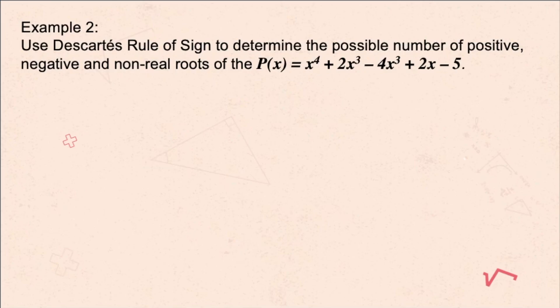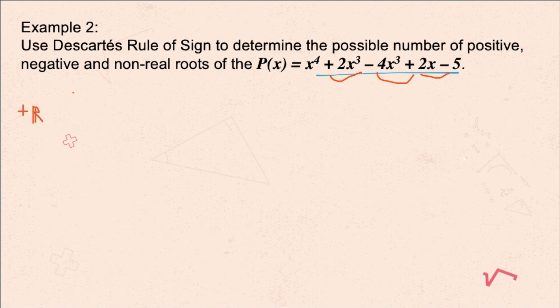Let's have the first example. Use Descartes' rule of signs to determine the possible number of positive, negative, and non-real roots of p of x equals x to the fourth power plus 2x cubed minus 4x squared plus 2x minus 5. Looking at p of x, we count the alternating symbols and find 3 variations. So for case 1, the number of positive real roots is 3. For case 2, we subtract 2: 3 minus 2 gives us 1 positive real root.